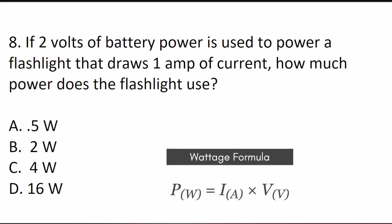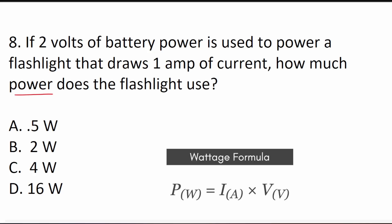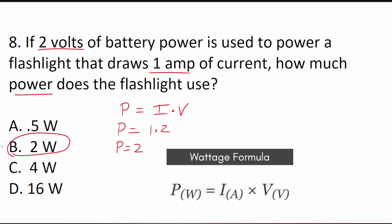Question 8 asks: if 2 volts of battery power is used to power a flashlight that draws 1 amp of current, how much power does the flashlight use? Power in watts equals current in amps times voltage in volts — a formula you must know for test day. Power = 1 amp × 2 volts = 2 watts. The answer is B, 2 watts of power.